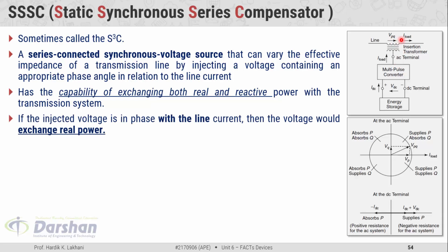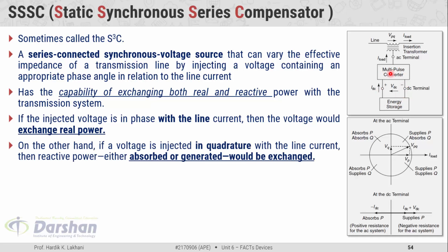If the injected voltage VPQ is in phase with the line current, then real power exchange would happen between the line and the compensator. On the other hand, if the injected voltage is in quadrature with the line current, then reactive power is either absorbed or generated. In short, the phase angle of the injected voltage decides either the exchange of real power or reactive power.